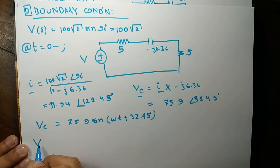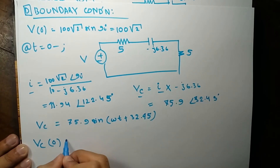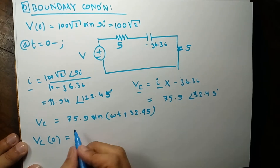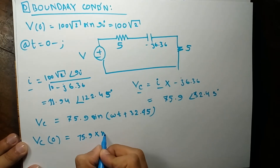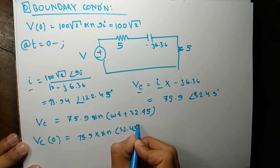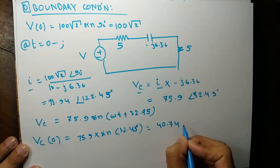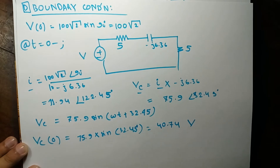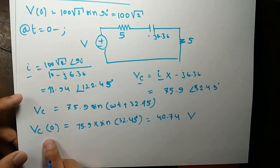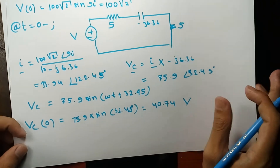To find the capacitor voltage specifically at t = 0, we substitute t = 0 into the expression, giving 75.9·sin(32.45°). This evaluates to 40.74 volts, which is the voltage across the capacitor at the moment t equals zero.